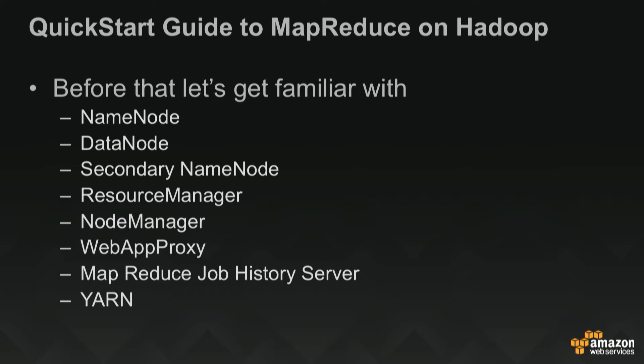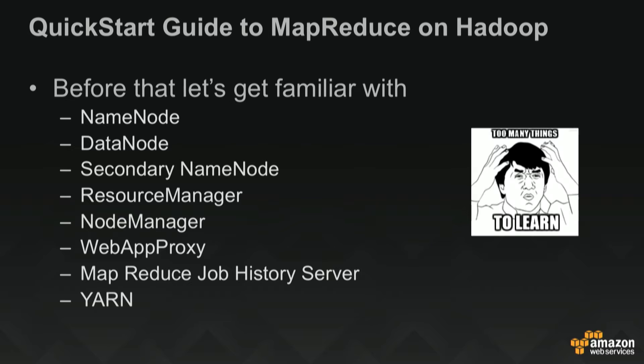Before that, let's get familiar with some terminology here: name node, data node, resource manager, YARN, et cetera. Just kidding — there's too many things here. The whole point is, how do we simplify this? How do we simplify the workflow for a developer or somebody who's not very familiar with infrastructure, or a data scientist? Just like pretty much everybody here, I have an obsession with serverless. The idea here was, how do you make this simpler from a developer perspective?